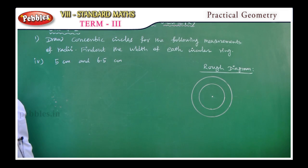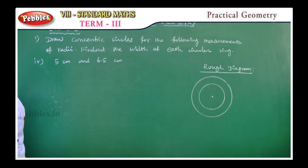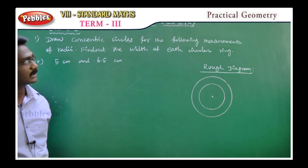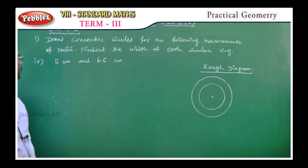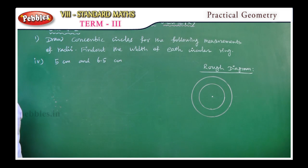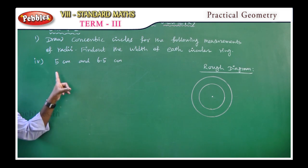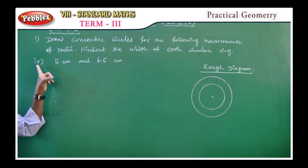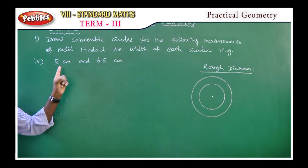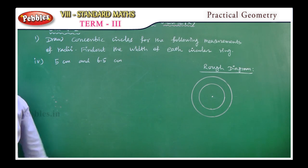I want you to draw concentric circles for the following measurements of radii. Find out the width of each circular ring. The fourth problem has radii of 5cm and 6.5cm.